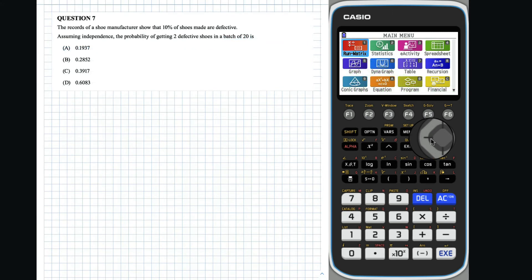Question 7: This scenario can be modelled using the binomial distribution, where p is equal to 0.1 and n is equal to 20. We want to find the probability that the number of defective shoes, x, in a batch of 20 is equal to 2. Utilizing the statistics mode, we can evaluate this probability.